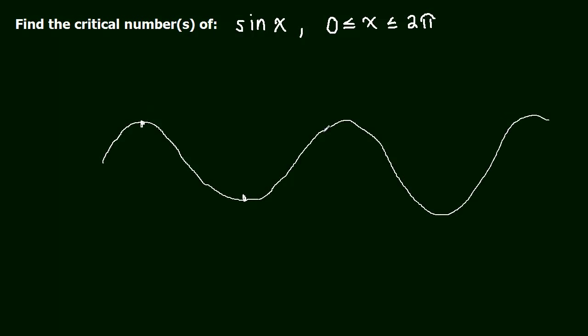So if we didn't say between 0 and 2π, we would have to list all of these, and this would just keep going. And it goes in the other direction too, so we would have to list all of those critical numbers, or we would have to create some formula that tells us the critical numbers, some sequence. Anyways, so we're only looking between 0 and 2π.